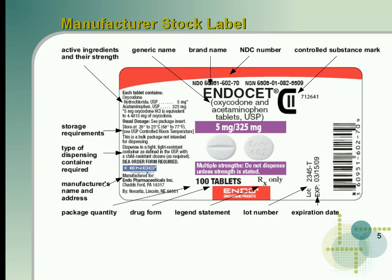When we look at the manufacturer's stock label, going around the label, you'll notice we have the generic name — Oxycodone and Acetaminophen tablets, USP. The brand name is Endocet. The NDC number is 60951-6027-0.